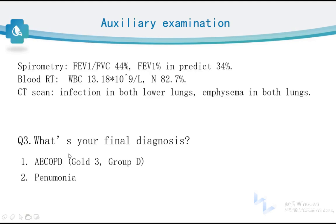The FEV1 in this AECOPD patient is 34%, which is between 30% and 50%, so we can conclude this patient belongs to GOLD grade 3. The blood routine test shows increased white blood cell count and neutrophil count, indicating the presence of infection. The CT scan shows infection in both lower lungs and emphysema in both lungs, confirming the diagnosis of pneumonia. Emphysema is part of COPD, so we write the diagnosis as AECOPD.